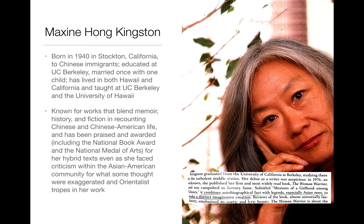Both works deal with a Chinese-American family where the mother grew up in China and the daughter is growing up in the United States, with the tensions that occasions, taking place in California around the 1950s and 60s. Yet we have two completely different literary treatments. 'Two Kinds' is a short story forming part of a popular novel, while 'No Name Woman' is a kind of story-slash-essay forming part of a memoir-slash-novel called The Woman Warrior, which is much more literary.